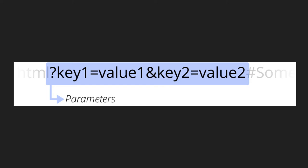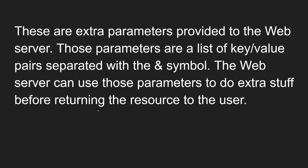The next part is key=value pairs — these are called query parameters. These are extra parameters provided to the web server, and they are a list of key-value pairs separated by the ampersand symbol. The web server can use those parameters to do extra manipulation before returning the resource to the user.